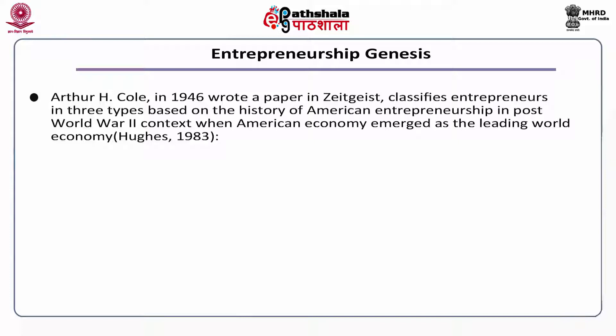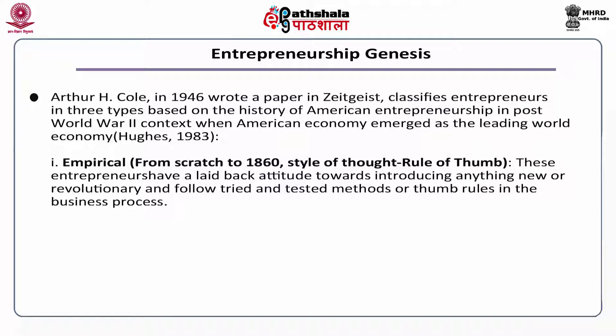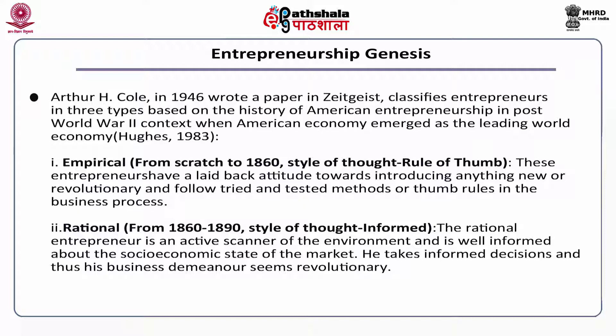Entrepreneurship genesis: Arthur H. Cole in 1946 wrote a paper classifying entrepreneurs into three basic types, based on the history of American entrepreneurship in the post-World War II context when the American economy emerged as the leading world economy. First, empirical entrepreneurs (from scratch to 1860), whose style of thought is rule of thumb — they have a laid-back attitude towards introducing anything new or revolutionary and follow tried and tested methods. Second, rational entrepreneurs (from 1860 to 1890) are active scanners of the environment, well-informed about the socioeconomic state of the market, taking informed decisions so their business demeanor seems revolutionary.